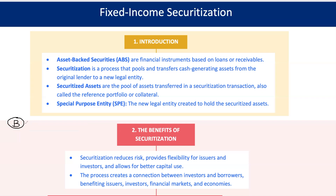Imagine a bank with car loans transferring them to an SPE. The SPE then sells securities to investors who receive the loan payments directly. The SPE has taken on the loans, and now the bank has freed up cash and reduced its risk.